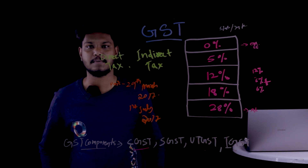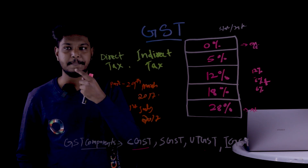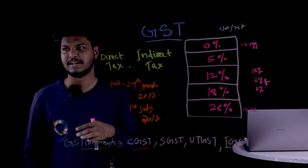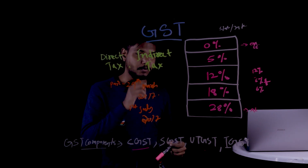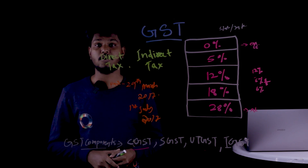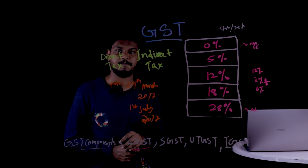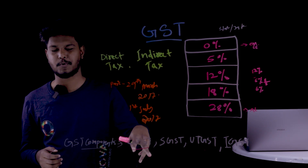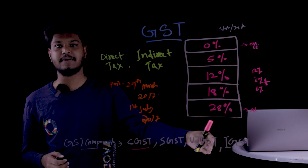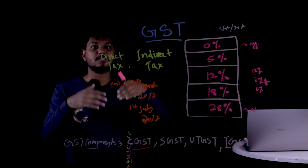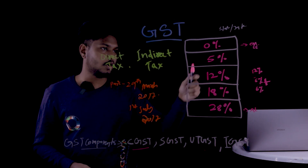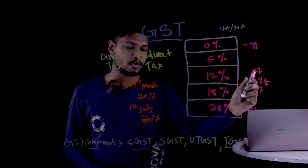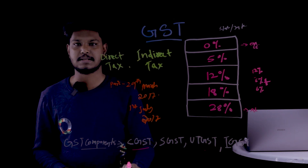IGST stands for Integrated GST, which applies to interstate transactions. For example, if a product is sold from Kerala to another state, 12% IGST applies — with 6% going to Central GST.